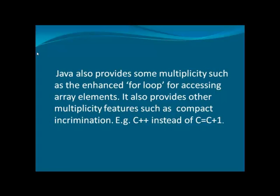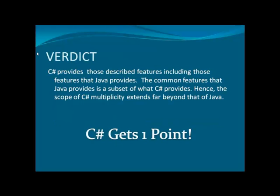Let's observe the multiplicity related to Java. Java also provides some multiplicity such as enhanced for loops for accessing array elements. It also provides other multiplicity features such as compact incrementation. At last, it's a verdict for multiplicity: C-Sharp provides those described features including all features that Java provides. The common features that Java provides are a subset of what C-Sharp produces. Hence, the scope of C-Sharp's multiplicity extends far beyond that of Java. C-Sharp gets another point.